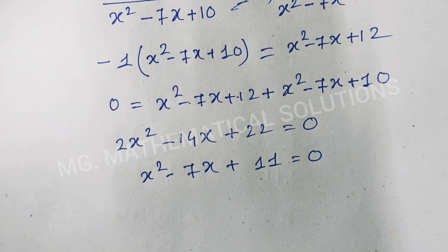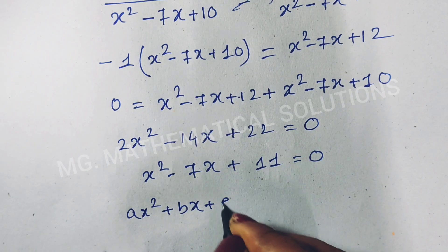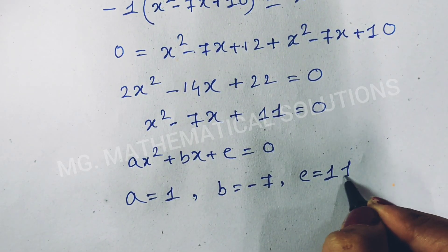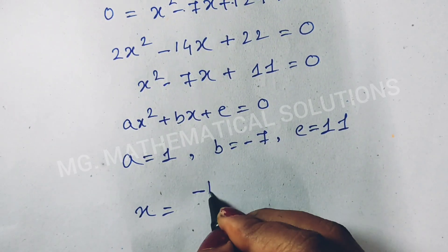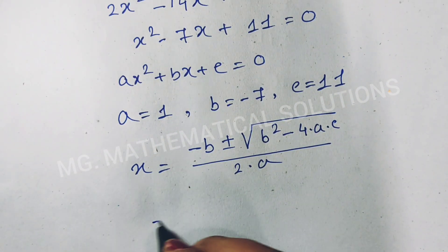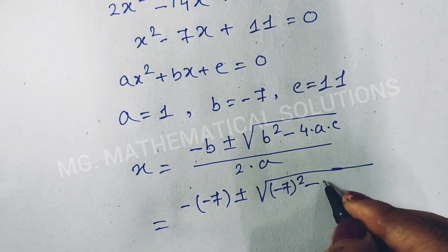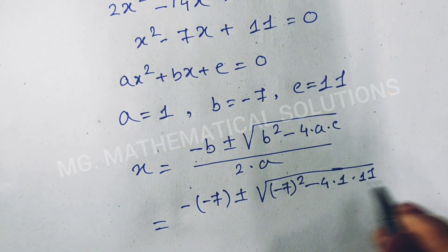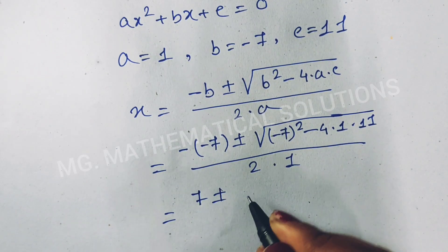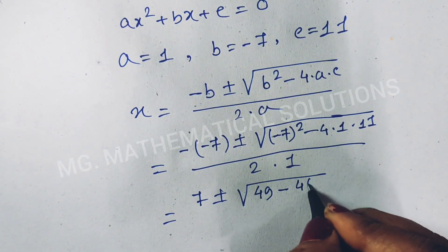This is a quadratic equation, so we solve it using the Sridharacharya formula. Comparing with ax² plus bx plus c equal to 0, here a equal to 1, b equal to minus 7, and c equal to 11. So x equal to [minus b plus or minus root(b²-4ac)] / 2a, which gives 7 plus or minus root(49 minus 44) over 2, that is root(5) over 2.